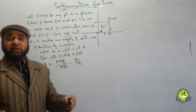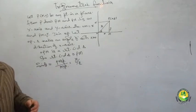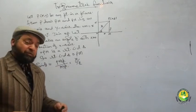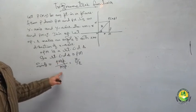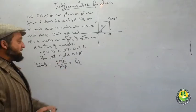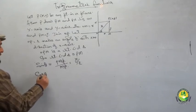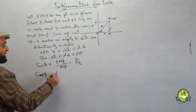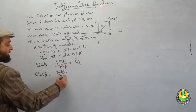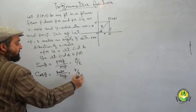Sine theta is the ratio of perpendicular divided by hypotenuse, that is y by r. Then cosine theta is equal to base divided by hypotenuse, that is x by r.